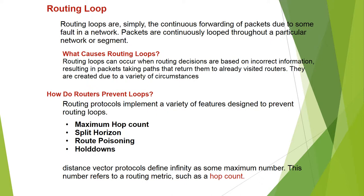They are caused due to a variety of circumstances. Routing protocols implement a variety of features designed to prevent routing loops, including: maximum hop count, split horizon, route poisoning, and hold-down timers. Distance vector protocols define infinity as some maximum number, which refers to a routing metric such as hop count.